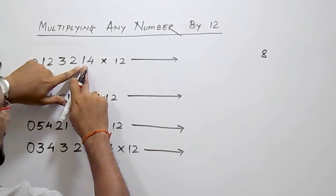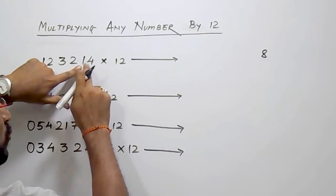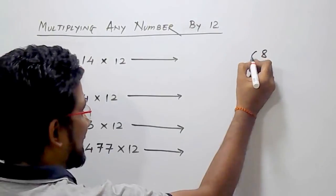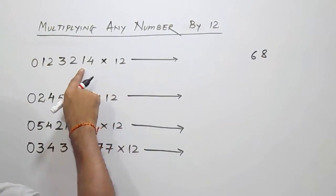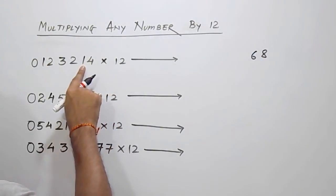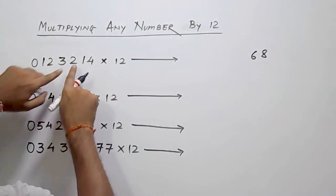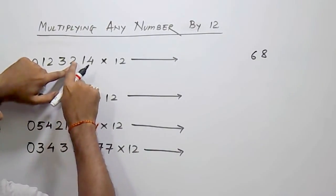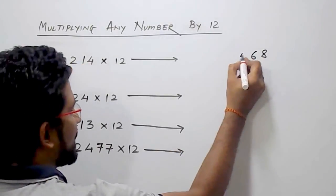Then go for the next digit, that is 1. 1's double is 2, 2 plus 4, that is 6. What you have to do now is double the digit and add to the previous digit. For the next one, 2's double is 4, 4 plus 1, that is 5.